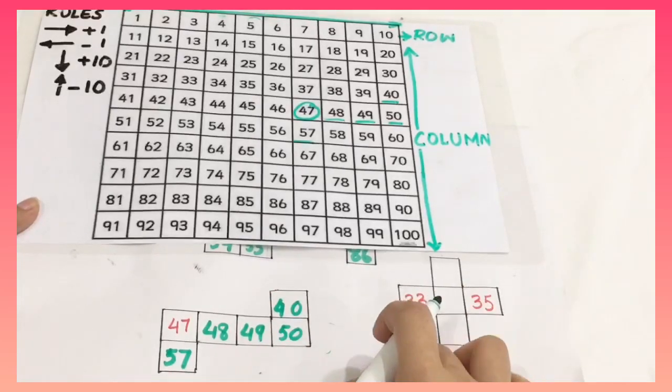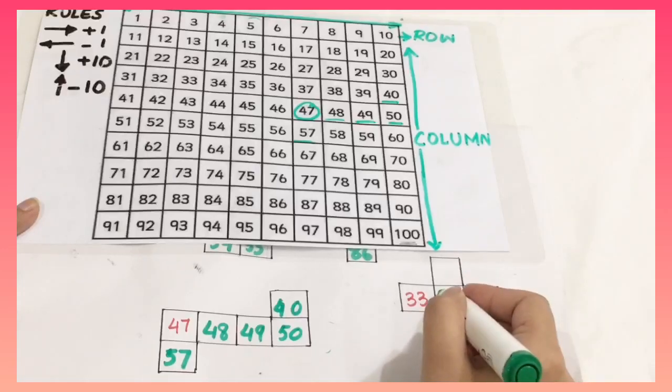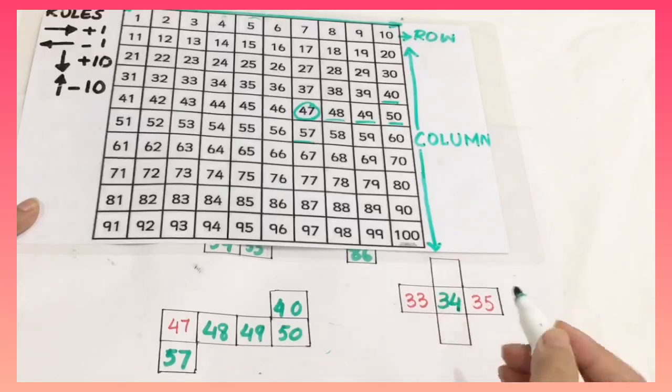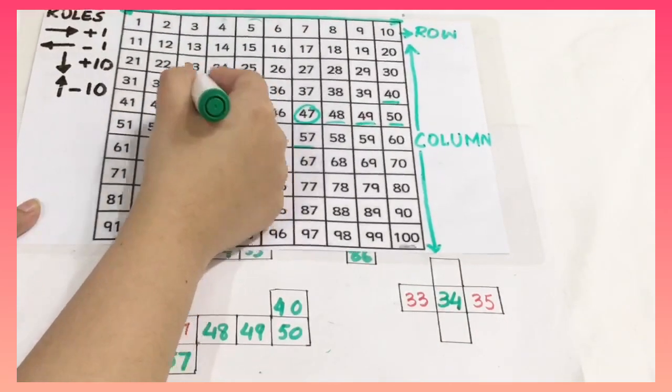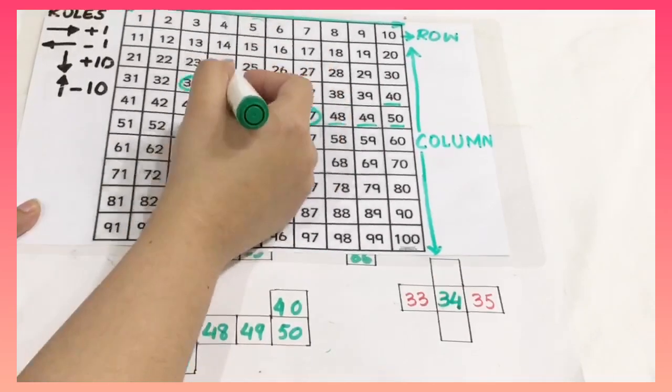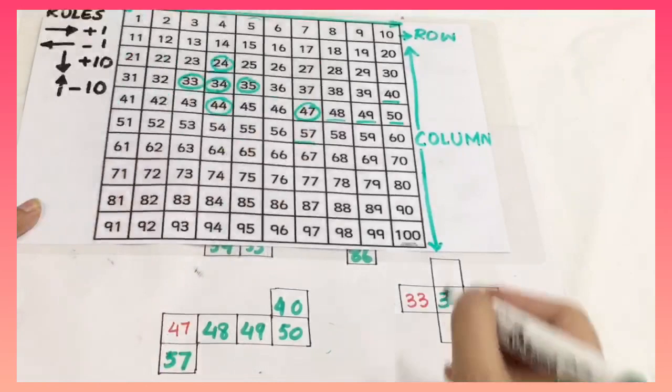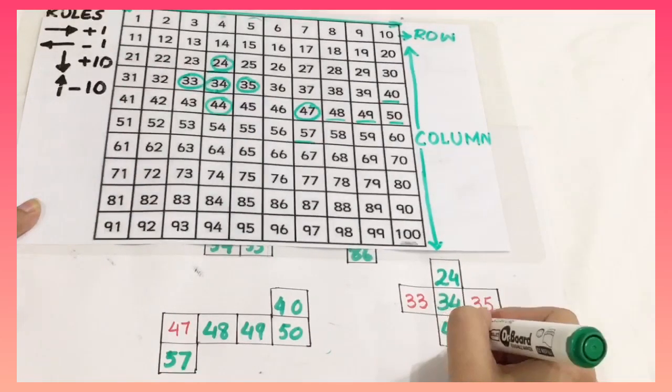Now let's have a look at this: 33 missing number and then 35. So simply I will write 34 here. Now let's have a look here: 34, 33, 35 and these two numbers here. I am going to write 24 and 44.